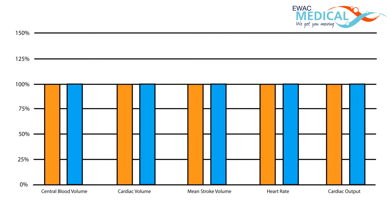In this graph we have displayed the cascade of cardiologic effects that occur when the human body is submerged in water. The central blood volume increases. The cardiac volume increases as well. The mean stroke volume increases. The heart rate slows down. And at the same time the total cardiac output increases.